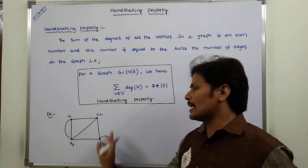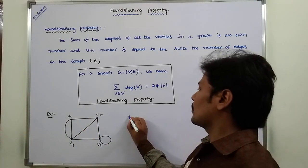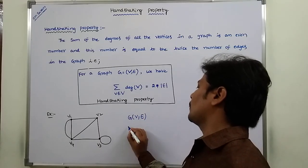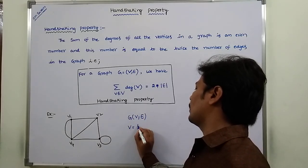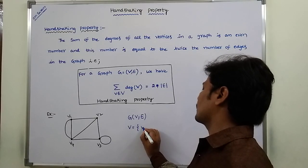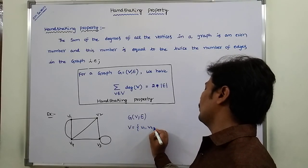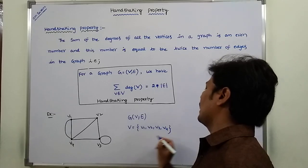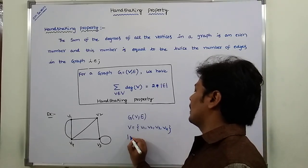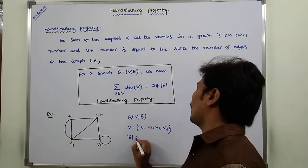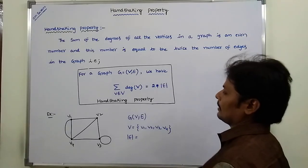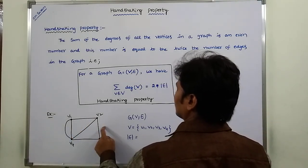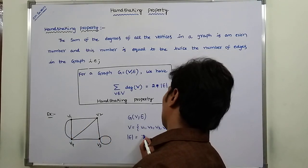Example. This is the given graph G(V, E). Capital V is equal to the set of vertices: V1, V2, V3, V4. The number of edges |E| — counting: 1, 2, 3, 4, 5, 6, 7 — there are 7 edges.